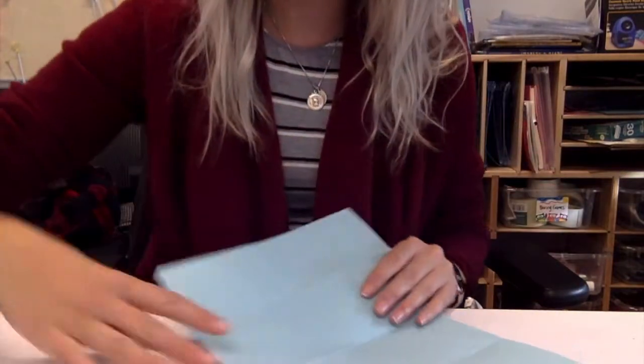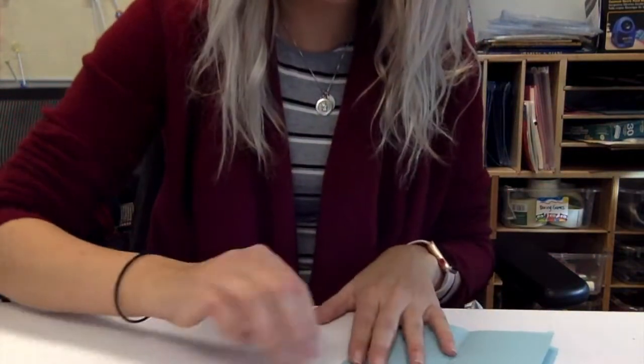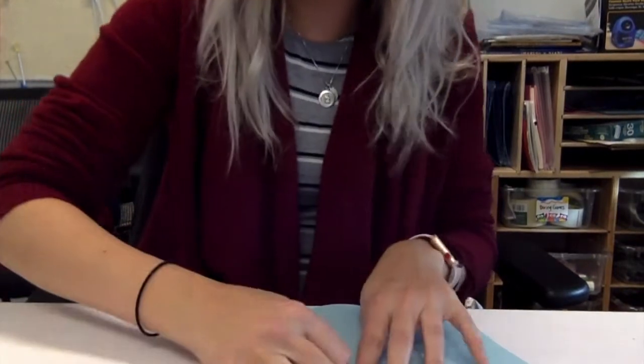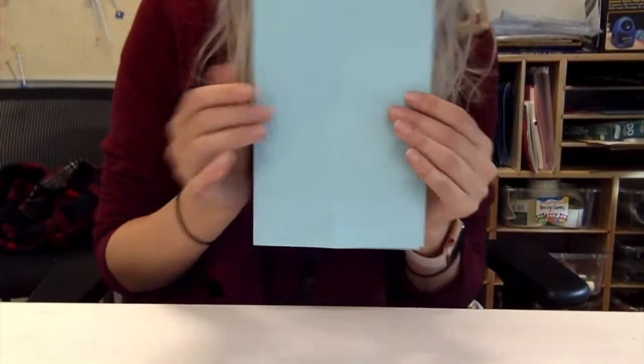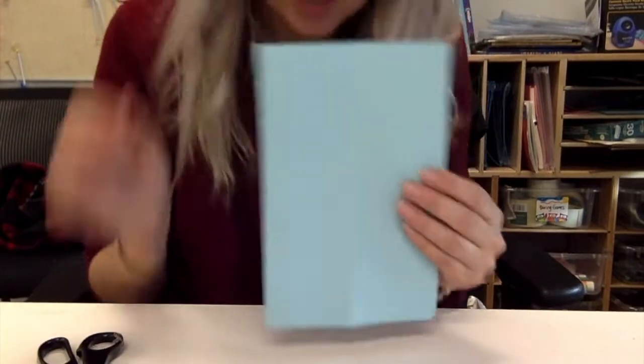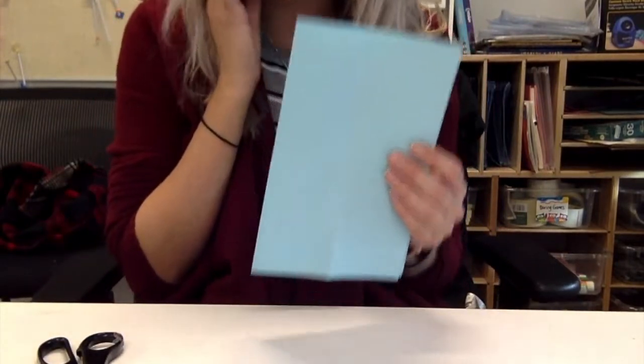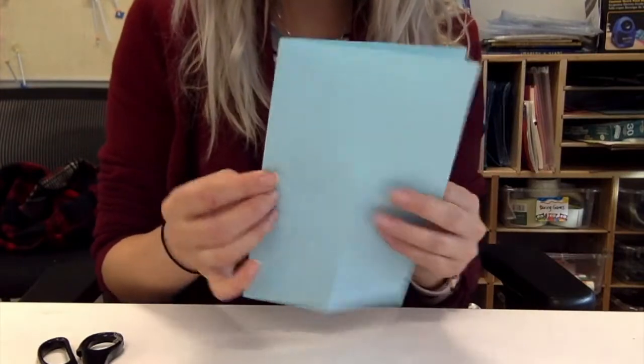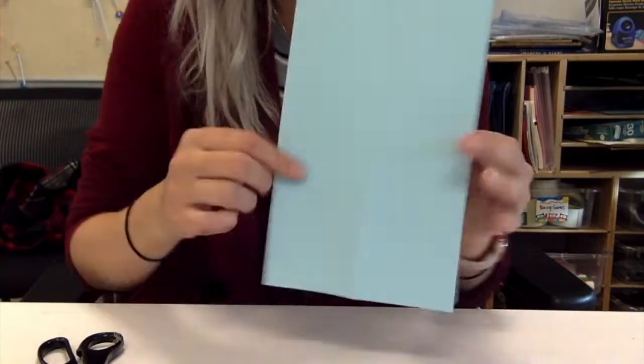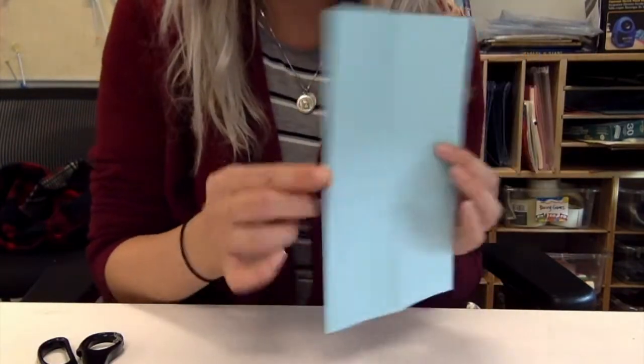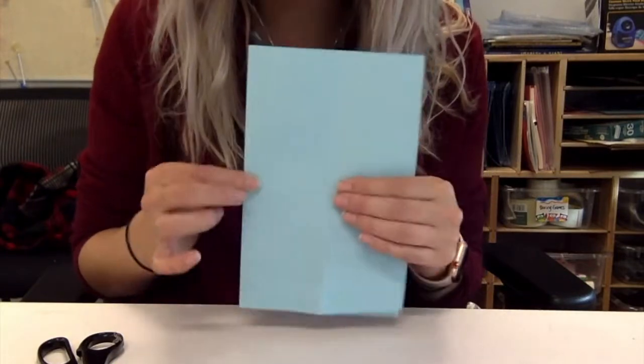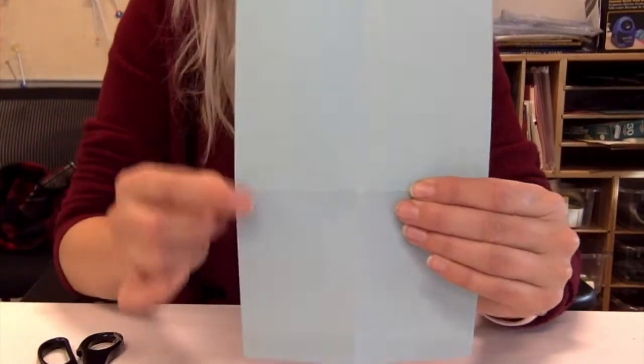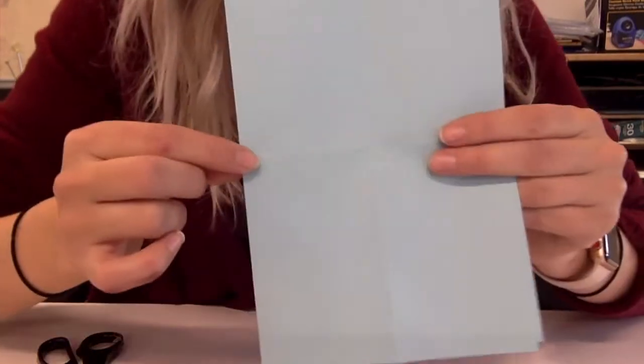Next, you're going to fold your page hamburger style. This next part is the part that sometimes we make mistakes at, and if we do, it's okay - you just have to start again. You are going to see the side that has the fold. There's an open side and a side with the fold. Make sure you're cutting on the side with the fold.